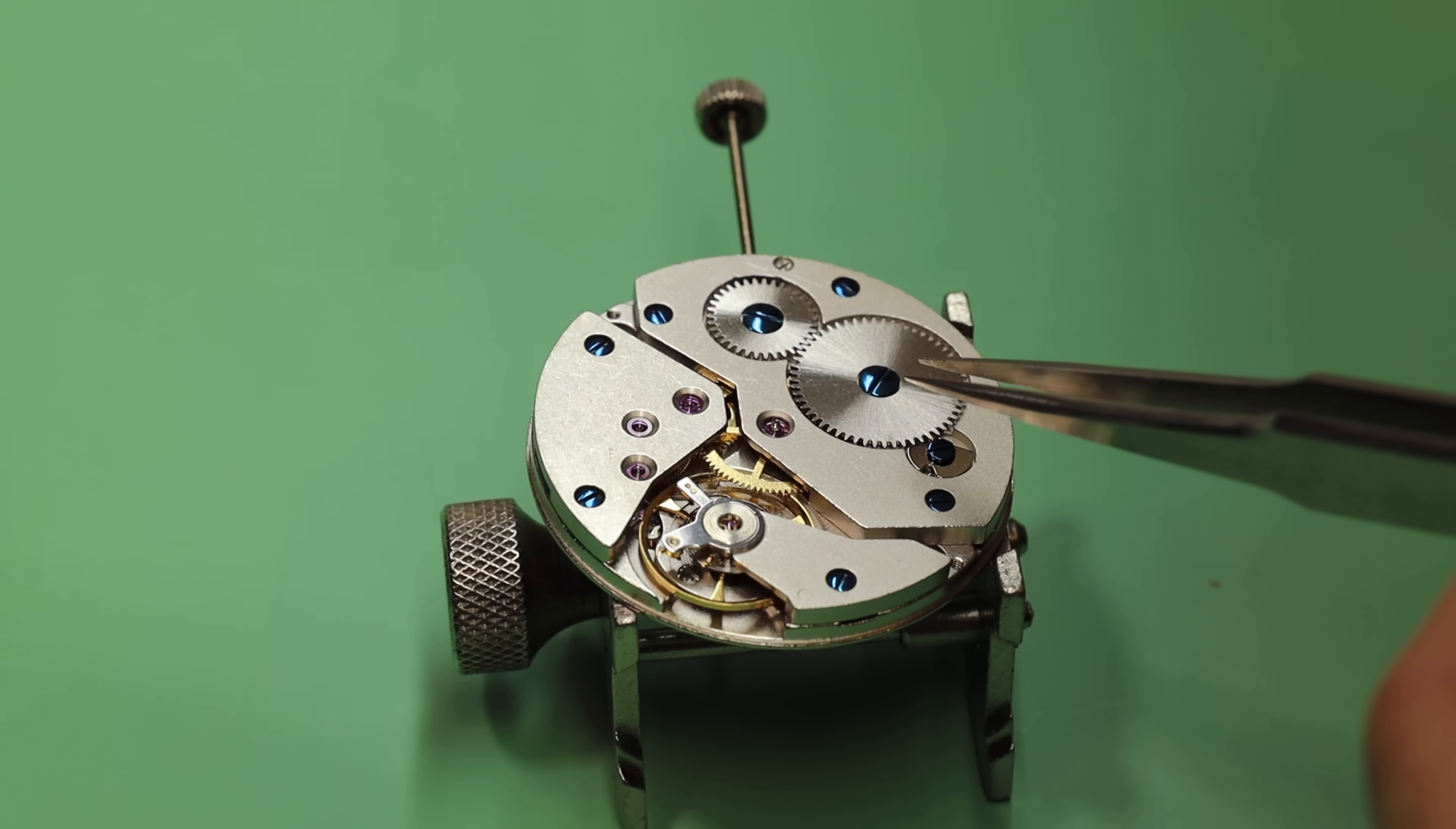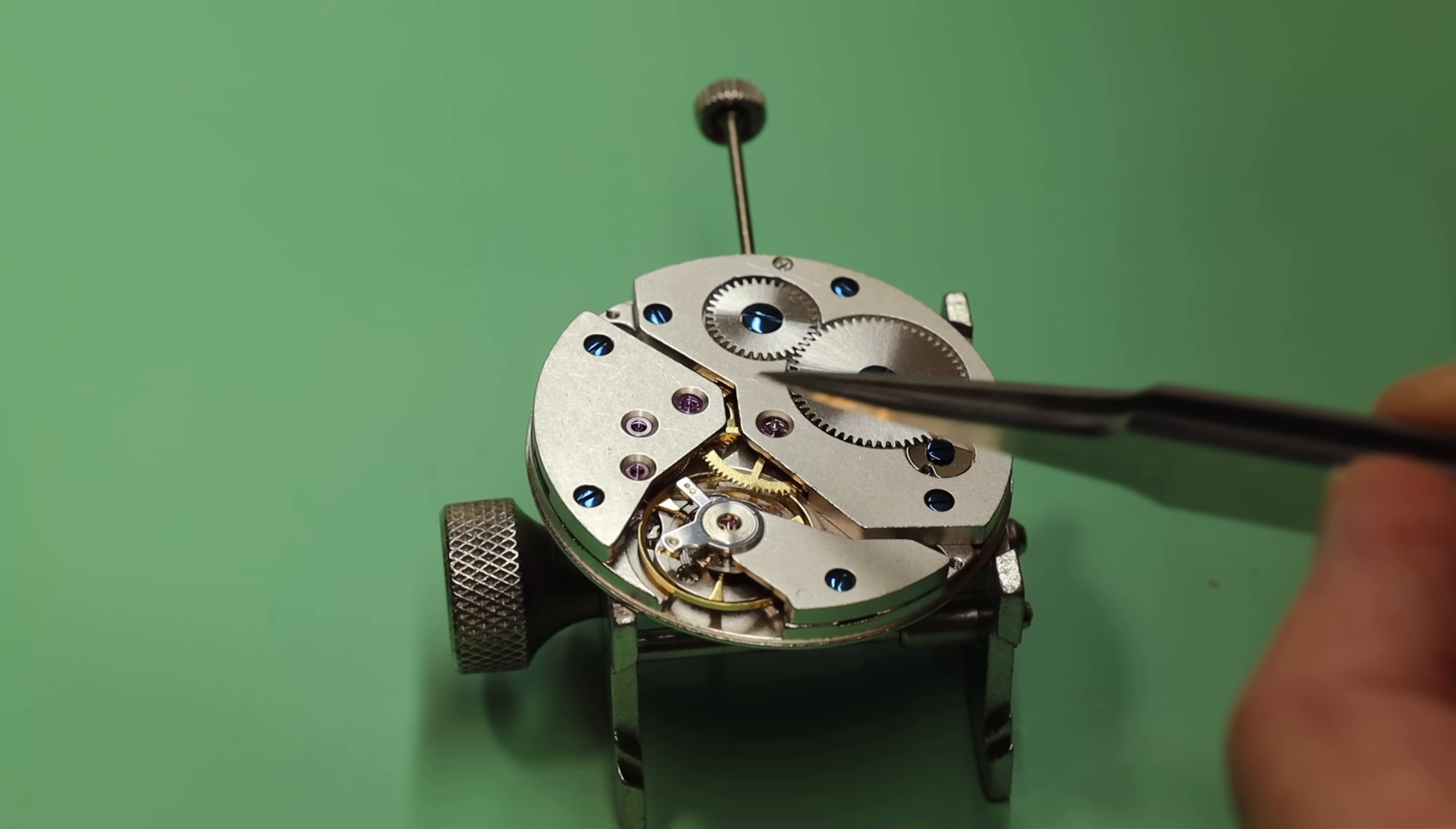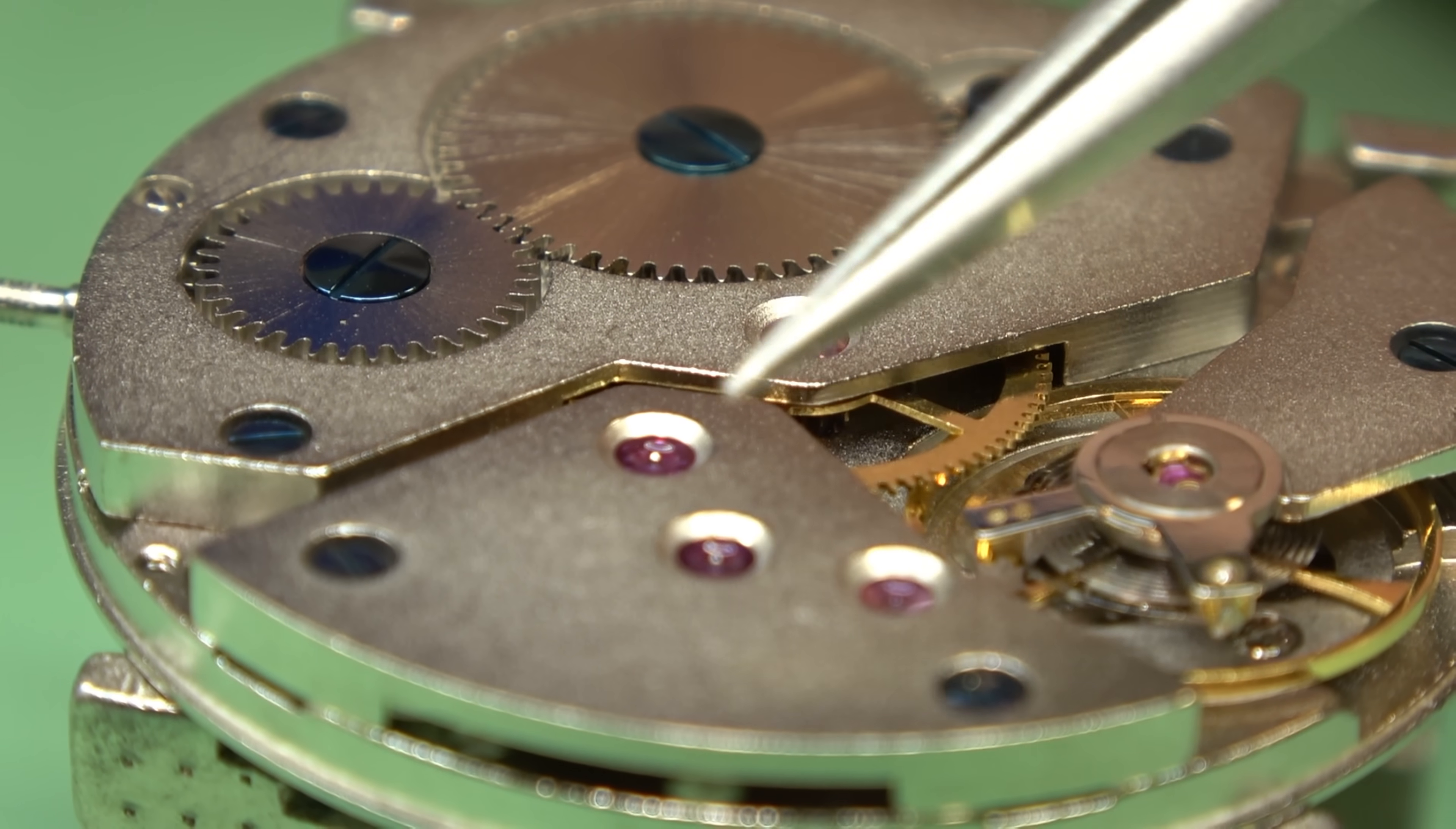So we're looking at what we would call the movement side or the backside. You look through an exhibition case back and this is what you see. Winding wheels here, you have a gear train here, balance wheel here. Under here is mainspring, second wheel, third wheel, and fourth wheel. What's interesting is because it's based on an older movement, it doesn't have center seconds. It has offset seconds. So that's taken care of over here.